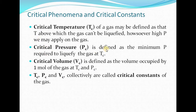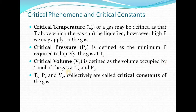Critical pressure is defined as the minimum pressure required to liquefy the gas at the critical temperature — this is the pressure at the condition of critical temperature at which the gas gets liquefied. Critical volume is defined as the volume occupied by one mole of the gas at conditions of critical temperature and critical pressure. All three — critical temperature, critical pressure, and critical volume — are collectively known as the critical constants of the gas.